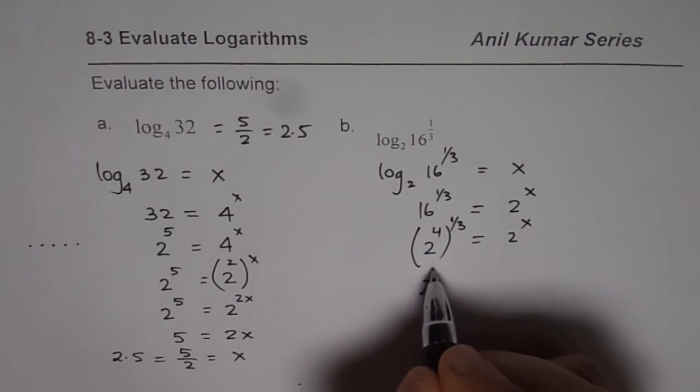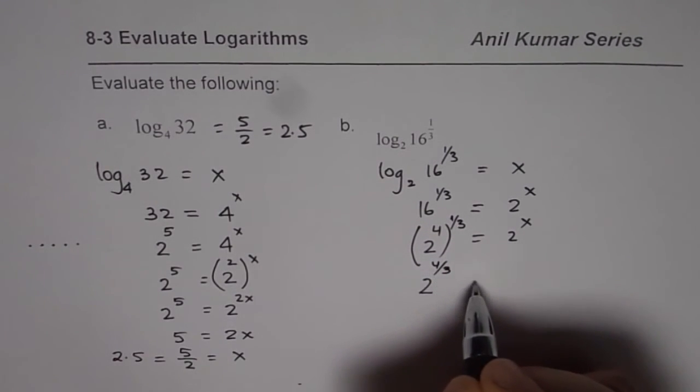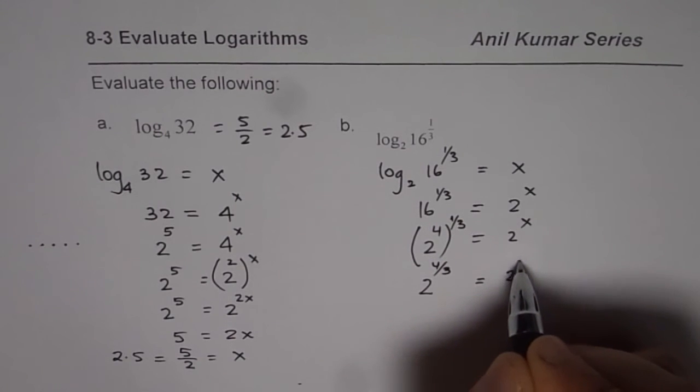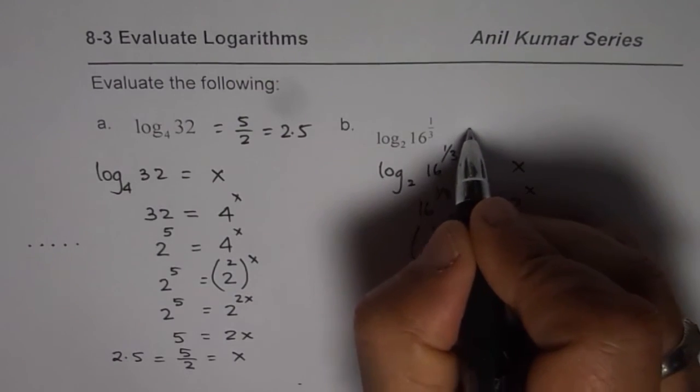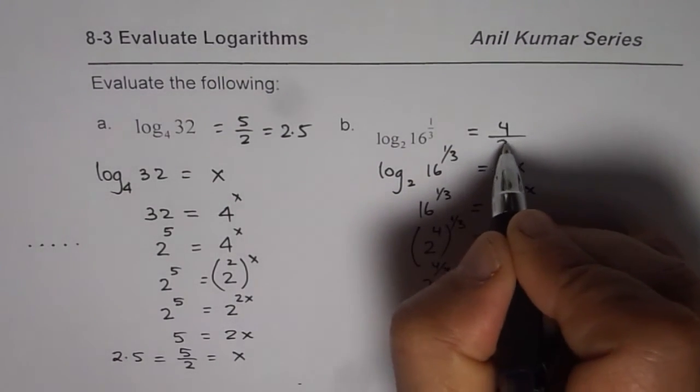Applying the exponential rules, we get 2 to the power of 4 over 3 equals to 2 to the power of x or 4 over 3 is equal to x. Therefore, our answer is 4 over 3.